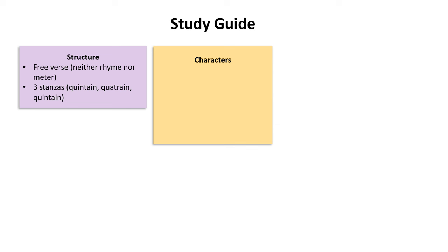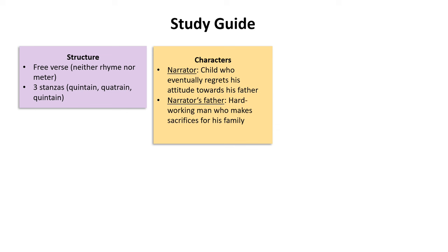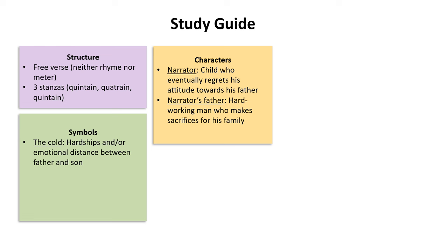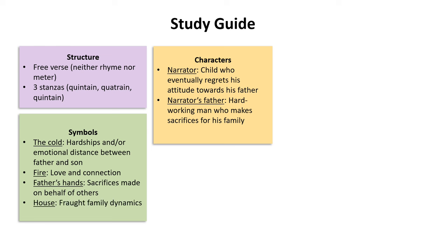There are two characters in the poem. The narrator is a child who eventually grows to regret his attitude towards his father, whereas his father is a hardworking man who makes sacrifices for his family. There are four key symbols: the cold itself, symbolizing hardships and/or the emotional distance between father and son; the fire, representing love and connection; the father's hands, representing sacrifices made on behalf of others; and the house, symbolizing fraught family dynamics or dysfunctional family structures.